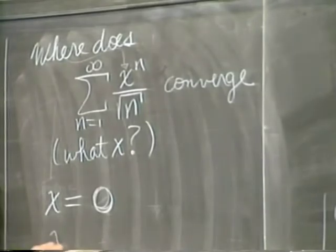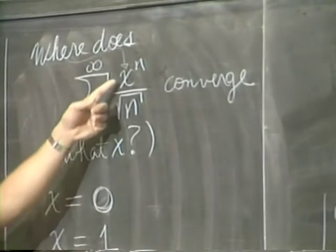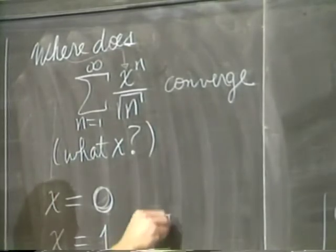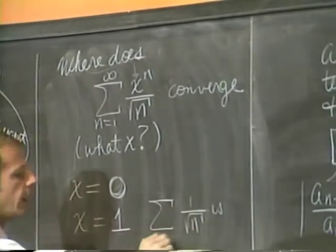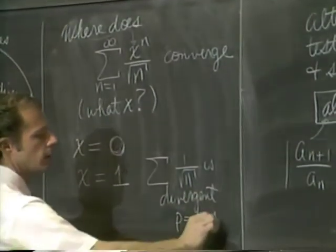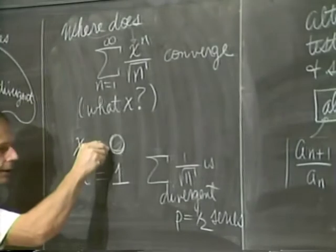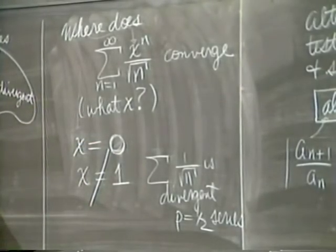I said that I heard an answer of one. Why do we know that that is not a convergence point? What happens at one? If I plug one in for x, P series, right. One over the square root of n is a divergent P equals one-half series. So I need to put a line through that. One is not a point of convergence. So now you can appreciate it's not an empty question. Some x's work, some don't.